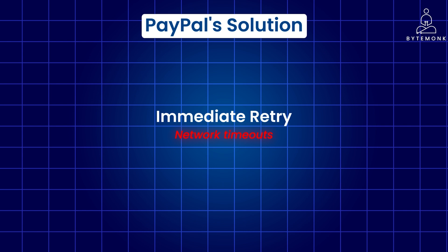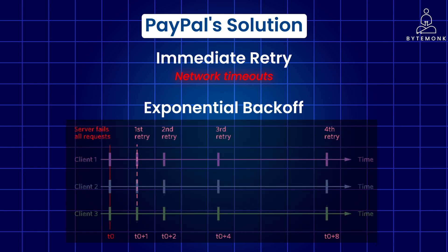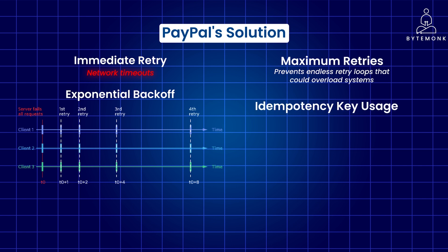Immediate retries are often done transparently to the client and can quickly resolve transient issues. If immediate retries fail or are not suitable, PayPal employs exponential backoff — meaning the time interval between retries gradually increases with each subsequent attempt. This reduces the load on PayPal's system and gives time for the underlying issue to resolve, for example retrying after 1, 2, 4, or 8 seconds. PayPal also sets a maximum limit on the number of retries to prevent endless loops. Throughout the retry process, PayPal consistently includes the same idempotency key in each request, ensuring the payment is only executed once.